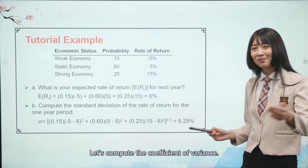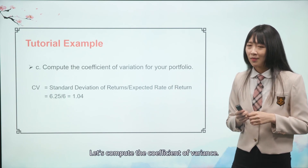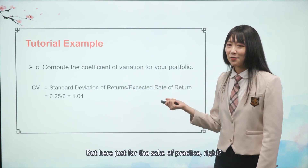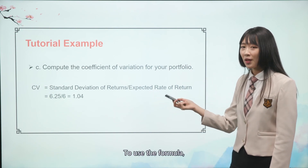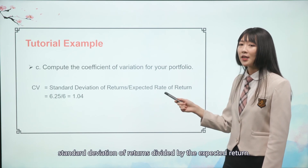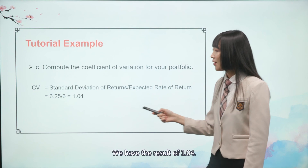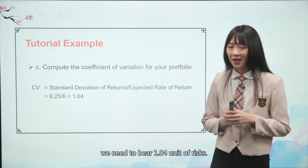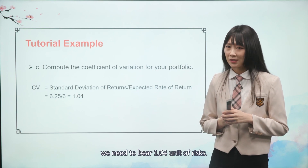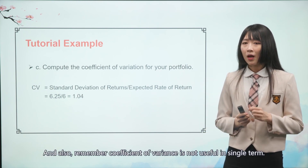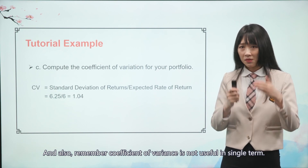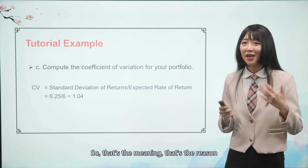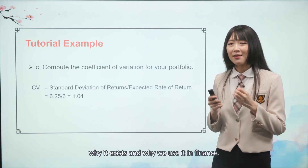Let's also compute the coefficient of variance. Remember, the coefficient of variance is not very useful by itself, but here it's for practice. Using the formula — standard deviation divided by expected return — we get a result of 1.04. This tells us that to have one more unit of expected return, we need to bear 1.04 units of risk. Remember, the coefficient of variance is a relative term and only meaningful when compared to another investment.